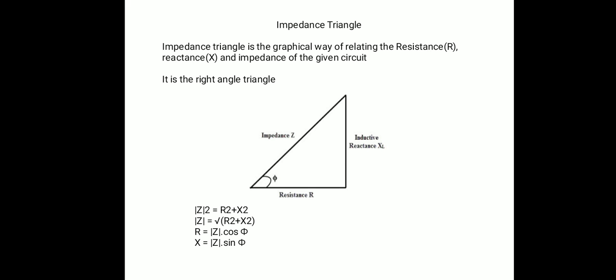The impedance triangle is the graphical way of relating the resistance R, reactance X and impedance Z of a given circuit. If we draw a graphical representation of resistance, impedance and reactance, we get a right angle triangle. That graphical way of relating reactance, impedance and resistance is called the impedance triangle, as we can see in the figure.